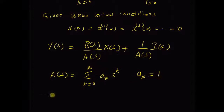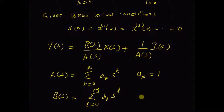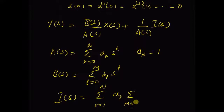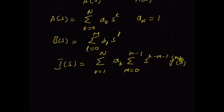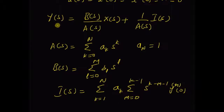a_k s^k, and a_n is equal to 1. The polynomial B(s) is equal to the sum L equal to 0 to m, b_L s^L. And finally, the sum I(s) is equal to k equal to 1 to n, a_k and again summation m equal to 0 to k minus 1, s^(k minus m minus 1) and the mth derivative at t equal to 0, or the initial value of the mth derivative.